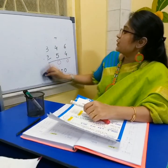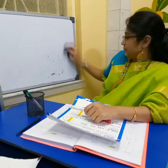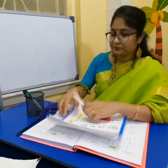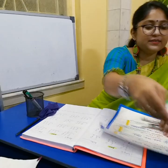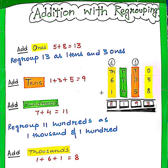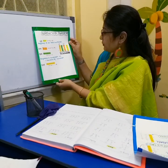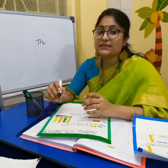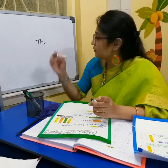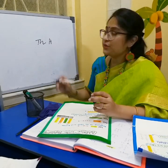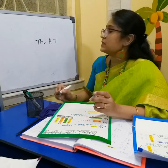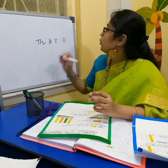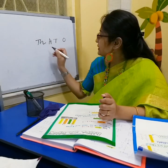Now we are going to 4-digit numbers. Again here is a chart. This is an example of a 4-digit number. So TH stands for thousands, H stands for hundreds, T stands for tens, and O stands for ones. We always have to start from the right-hand side. Let's do the example: 6,735 plus 1,458.